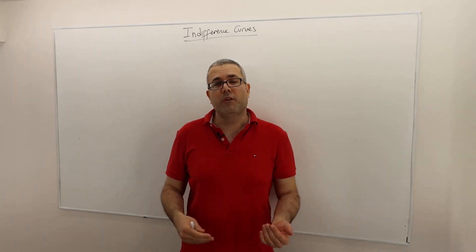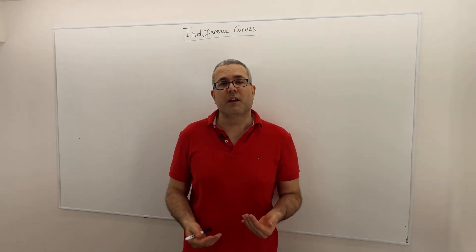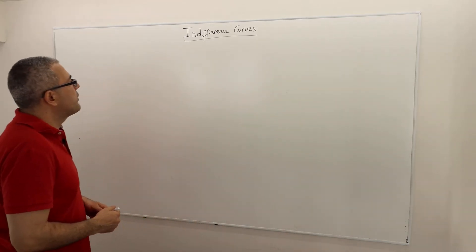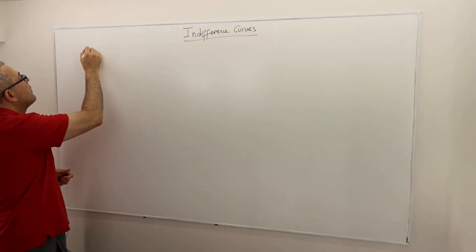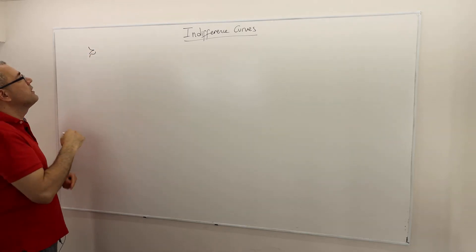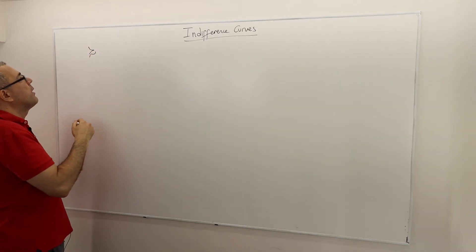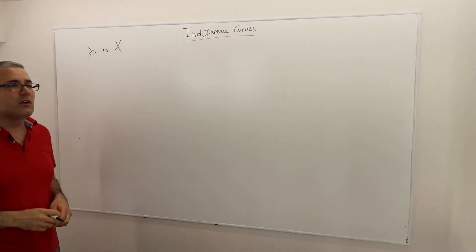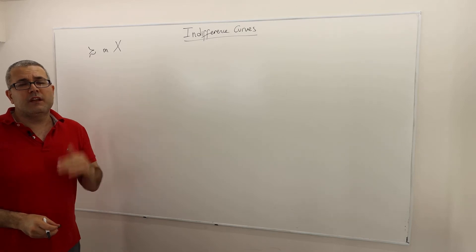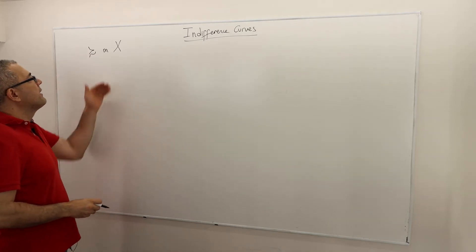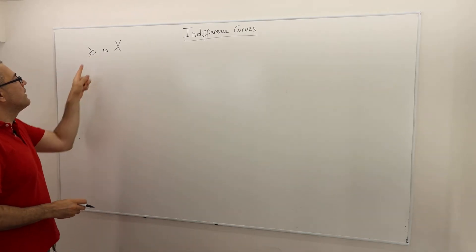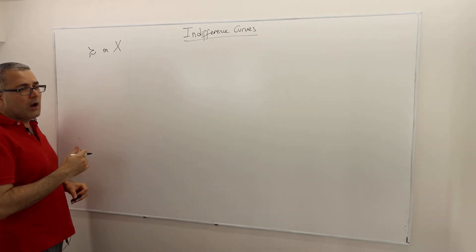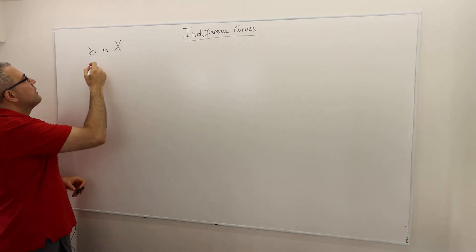Hello everyone. In this episode we are going to talk about indifference curves. Let's start with a preference relation — a complete, transitive, and reflexive binary relation on some set of alternatives X. X can be finite or infinite; it's a set of alternatives, and the preference relation is defined on this set X.